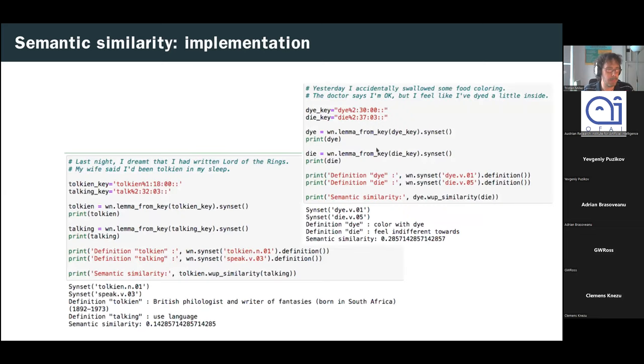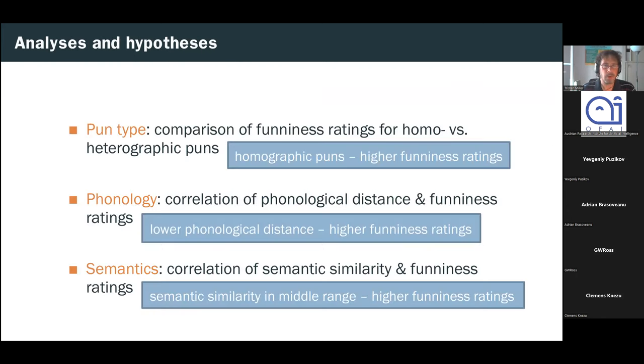So again, just an example of our implementation. So from the dye and dye pun that you saw in the earlier slide, we can compare dye meaning color with dye, and dye meaning feeling different towards, and end up with a semantic similarity score, say, of 0.2857, or compare talking and talking, and end up with a much more semantic similarity score.